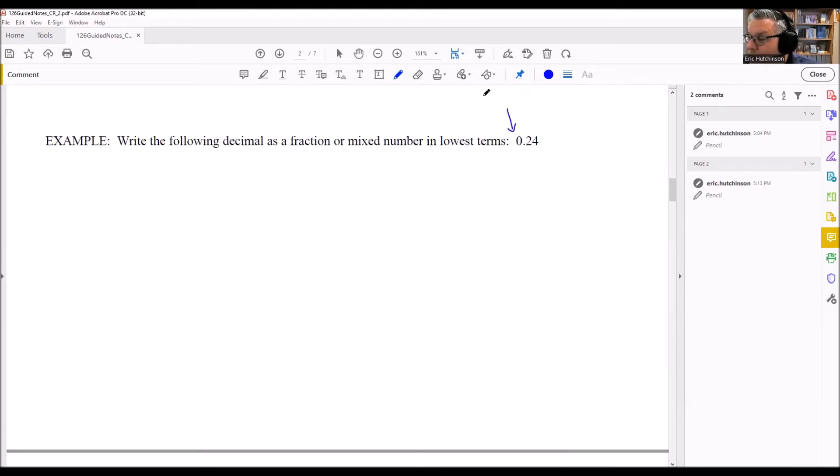The first one, this would be the ones, the ones digit we have right there. This next one, this would be tenths. And then the one on the end would be hundredths.